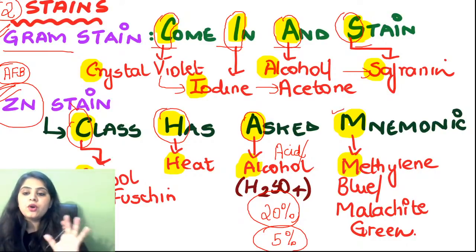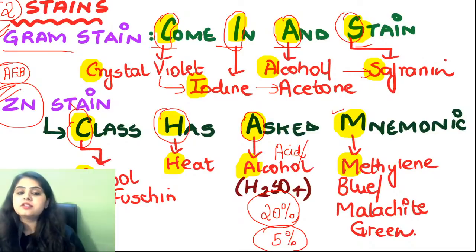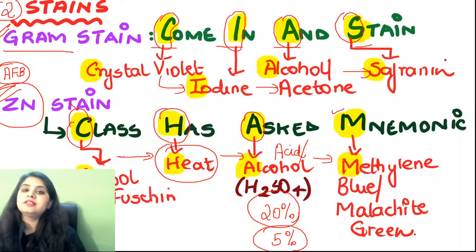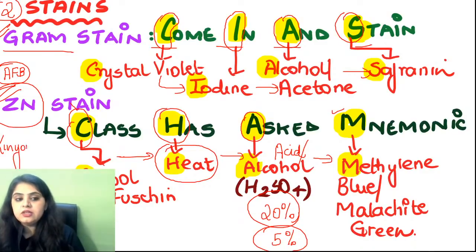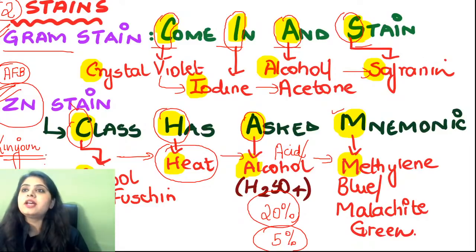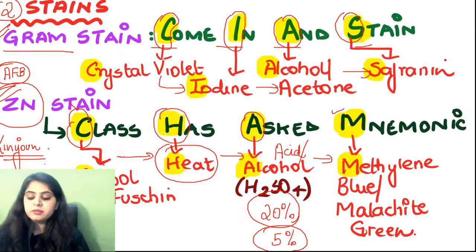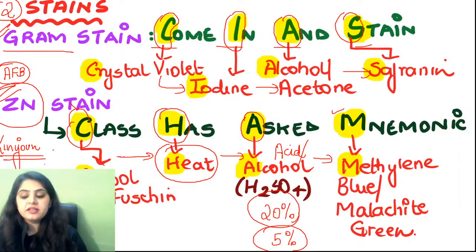The background can be methylene blue or malachite green. Dr. Kaushik asks: is there anything for which we use 1% H2SO4? Yes — Nocardia stains with 1% H2SO4 concentration. So to summarize: 20% for TB, 5% for lepra bacillus, 1% for Nocardia.